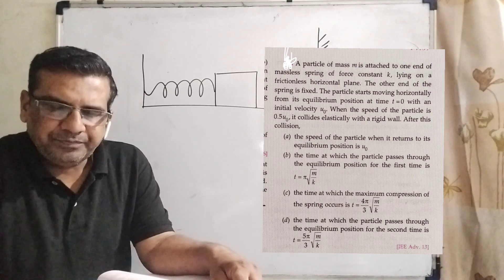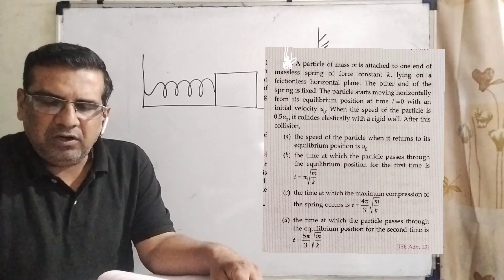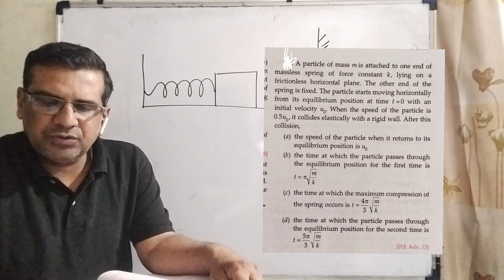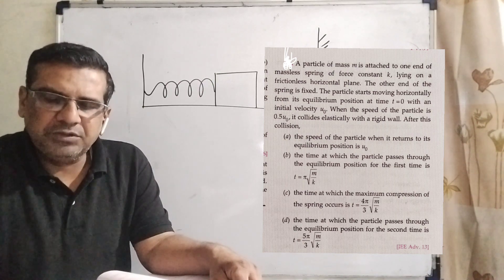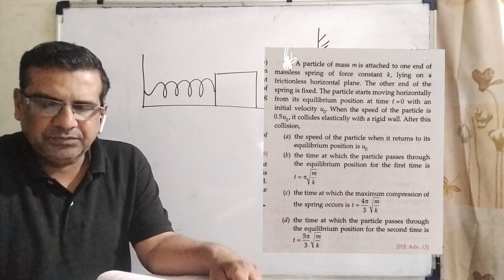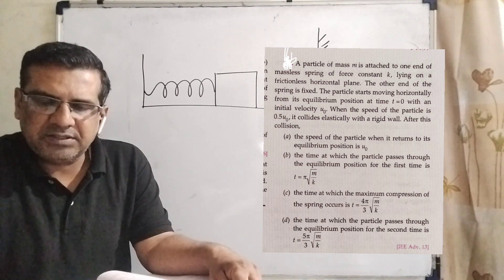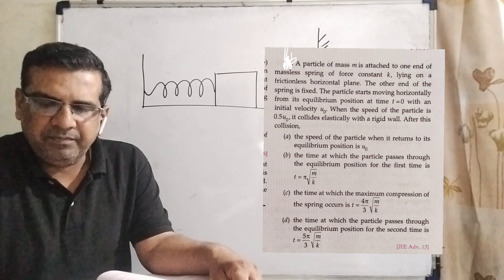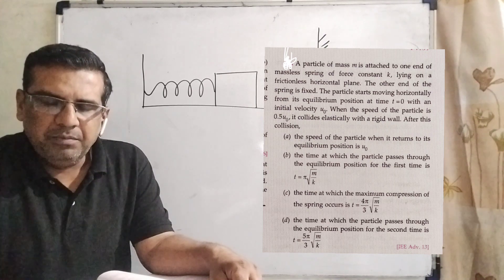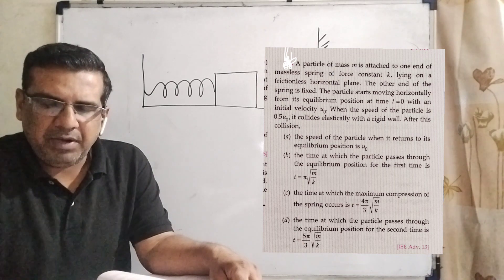Option A: The speed of the particle when it returns to its equilibrium position is u0. Option B: The time at which the particle passes through the equilibrium position for the first time is t equal to pi times root m by k.